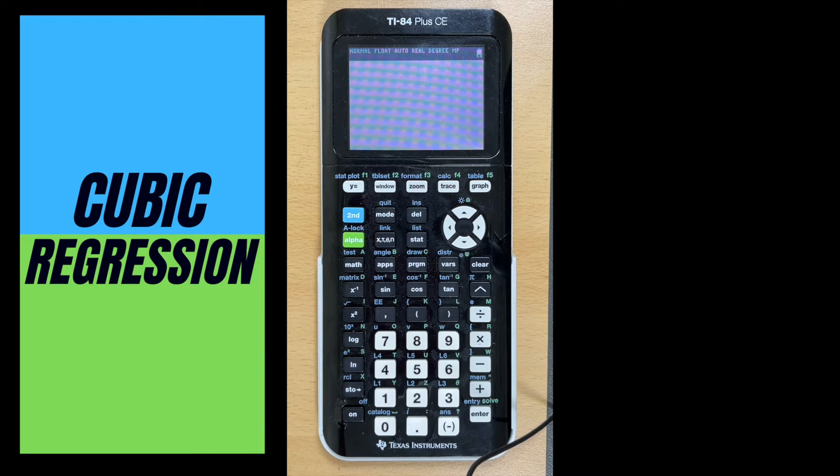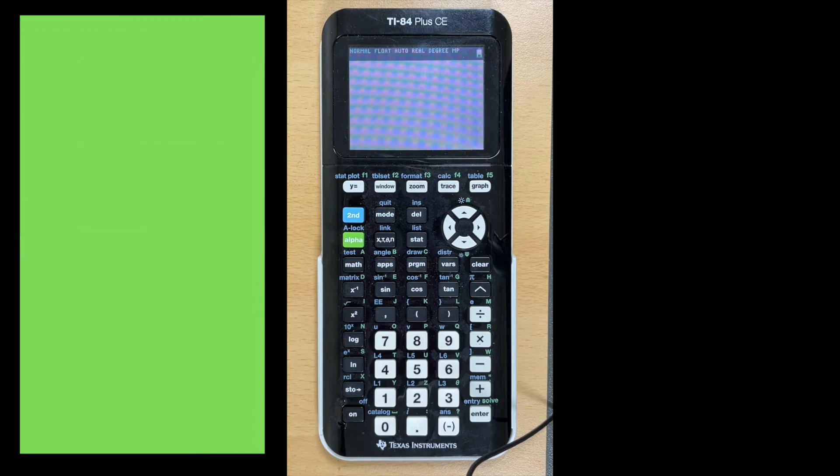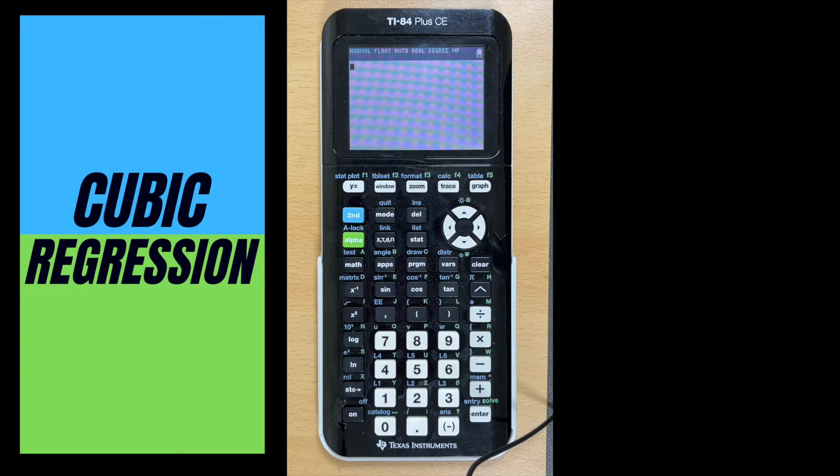When we want to use cubic regression is when we have a data set, some x and y values, and we're able to plot them on our calculator. We want to figure out, we know it's a cubic function, whether we're talking about the differences of the y values and we figure out that the third differences are constant, so we know that it's a cubic function, we just want to write the equation of it. That's what we can use this cubic regression feature on our calculator to do.